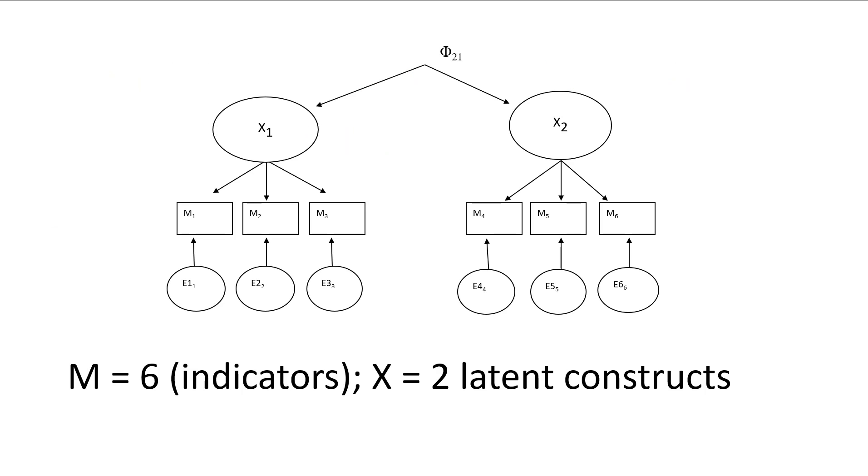If we had a simple measurement model here with two latent constructs, each measured by three observables, our m would be six—we have six total observables. The x is two latent constructs. In measurement models like a CFA, all latent constructs are treated as independent. They don't have relationships going between constructs, so all latent constructs in a measurement model are considered independent.